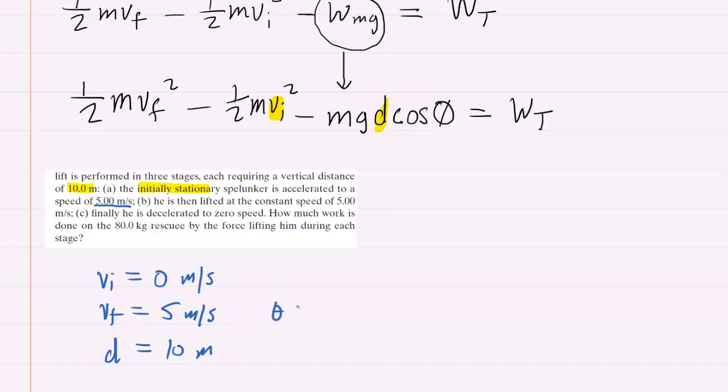Again the distance traveled is 10 meters. We've stated the angle between gravity and the displacement is 180 degrees. We know that g is 9.8 meters per second squared. And then finally the mass of the spelunker is given as 80 kilograms. So this is all the information for part A. Let's go ahead and plug it all into our equation.